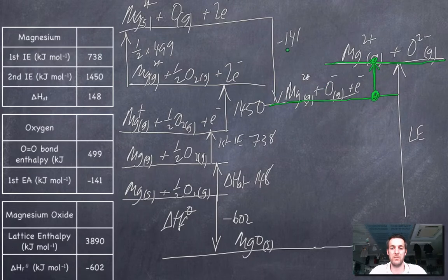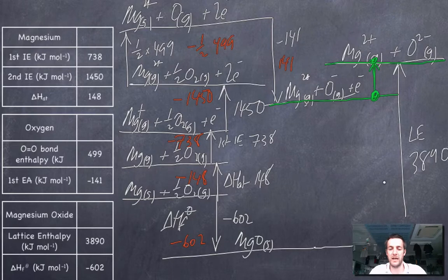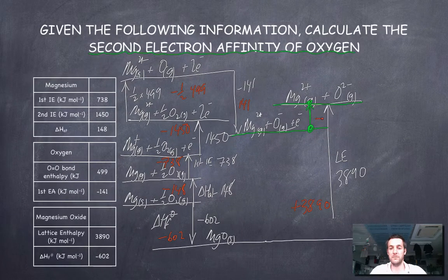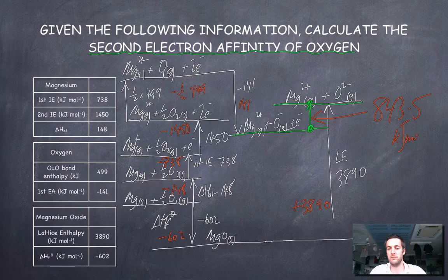So we're going to go against this arrow, so it's going to be minus -141, so this is going to be +141. Then we're going against this arrow here, so minus a half of 499. We're going against this, so this will be -1450. And against this one, -738. And against this one, -148. And not against this one, with this one here, so this will be -602. And we're going with this arrow here, that's 3890. So we're going to add 3890 to all this stuff that we've already calculated here. And the answer that I got for this value here was 843.5 kilojoules per mole.